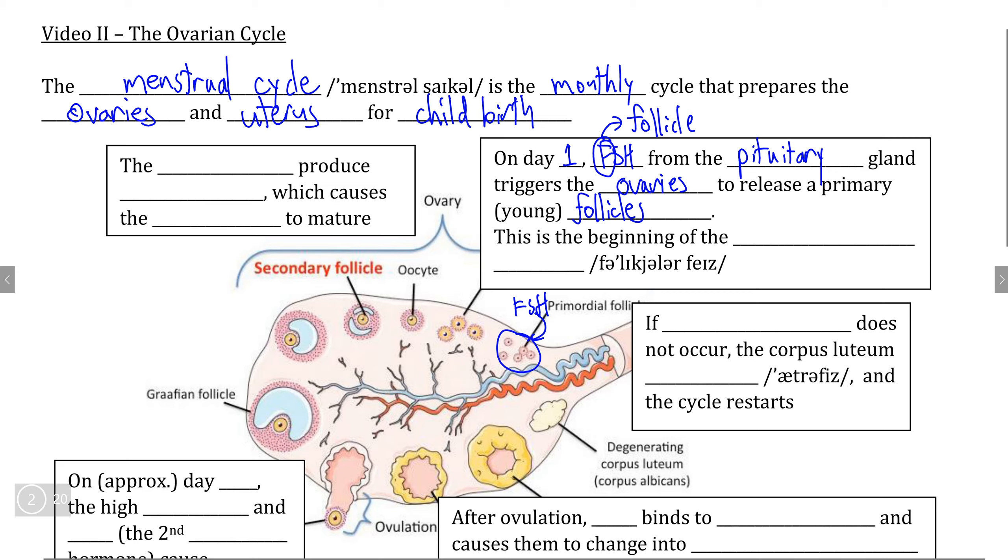FSH also has the job of selecting which of these follicles is going to become what we call the primary follicle. The primary follicle is going to be the follicle that will grow and develop into a mature follicle containing a mature ovum that is able to be fertilized, which is released from the ovaries during the process of ovulation. This selection process of making the chosen primary follicle begins what we call the follicular phase of the ovarian cycle.